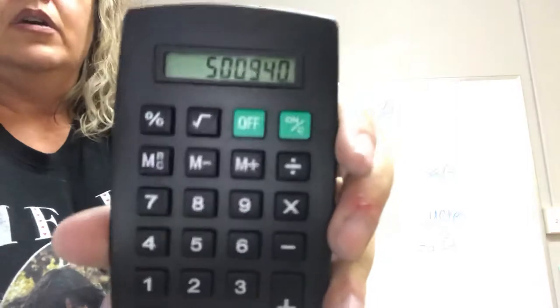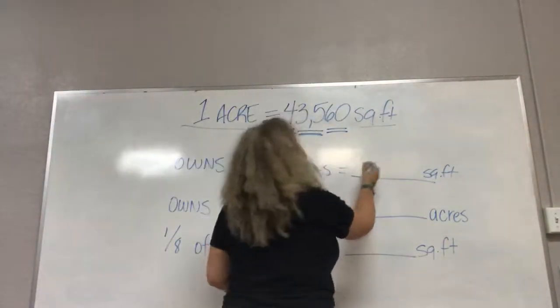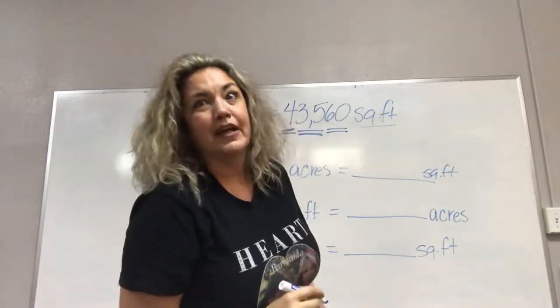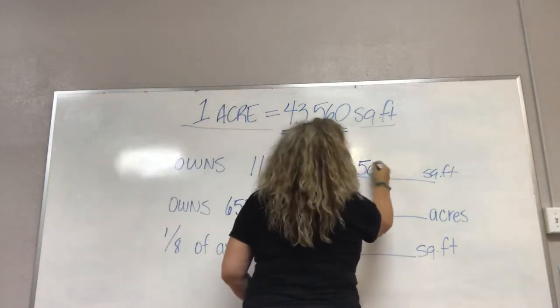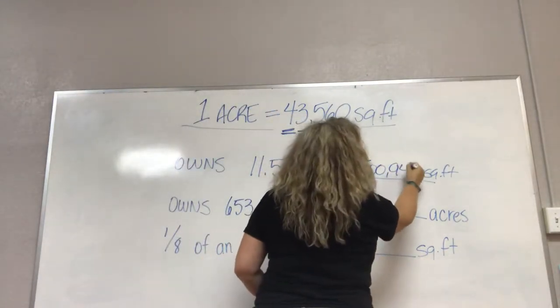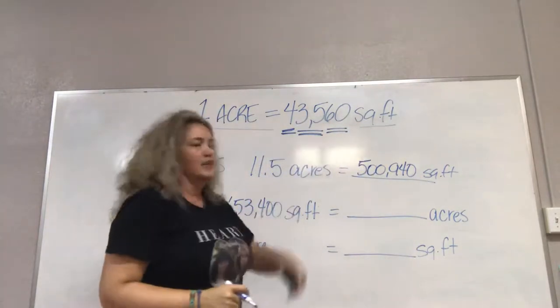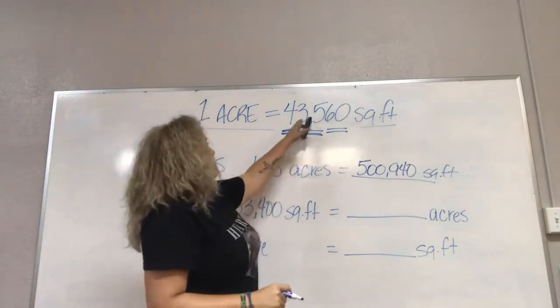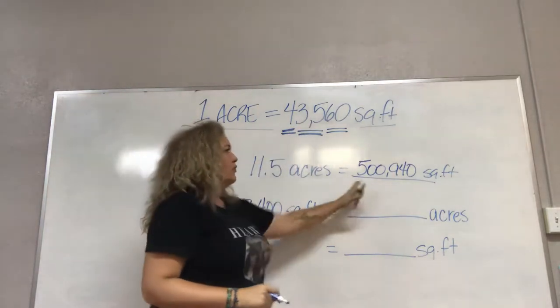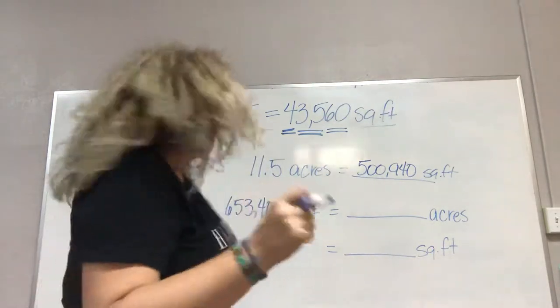Equals holy shnikes, half a million acres. 500,940 square feet are in 11.5 acres. And we multiply 11.5 times 43,560 square feet to get 500,940.